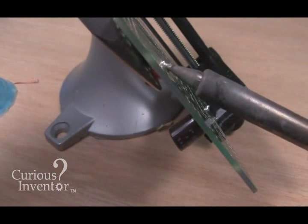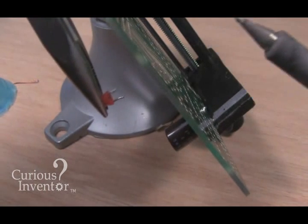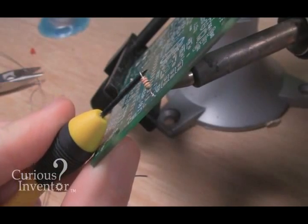For components with nearby leads, you can heat both at once with an iron, and simply pull the part out. On resistors, you can pull one leg out at a time.